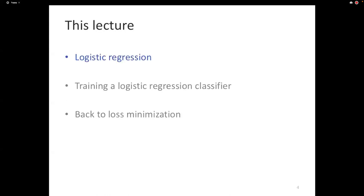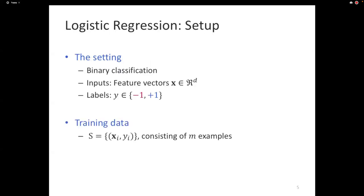Let's start off by looking at logistic regression. We're back to classification. Our inputs are d-dimensional vectors, our features represent the feature space, and our labels are minus one or one — a binary classification problem. We assume we have a training set S consisting of M examples: feature vector x_i paired with the ground truth label y_i. Our goal is to find a classifier that mimics the process that labels these examples.